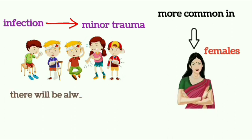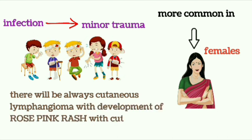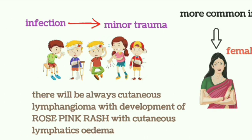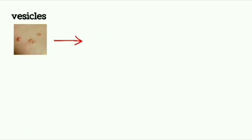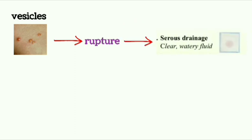There will always be cutaneous lymphangitis. Along with this, there is development of a rose pink rash with cutaneous lymphatic edema. Vesicles form eventually and will rupture to cause serous discharge.